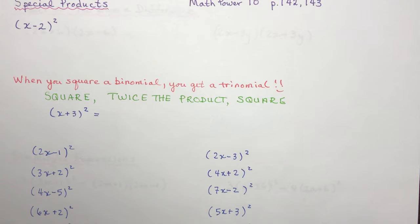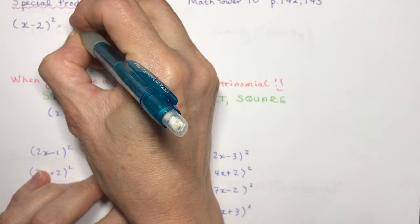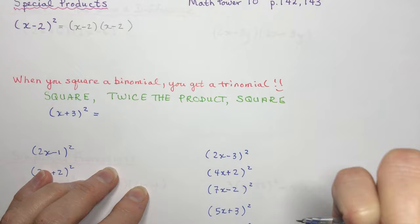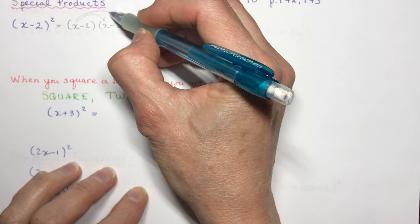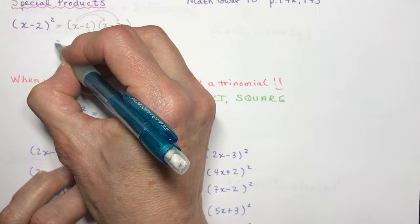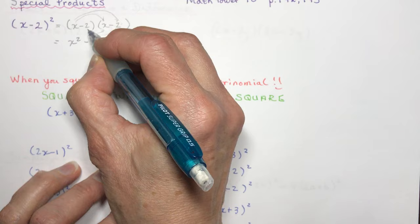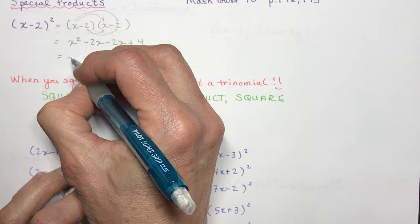If we look at (x − 2) squared, you know right away that means (x − 2) times (x − 2). Most of you would now know how to expand this using FOIL or multiplying each term in one bracket by every term in the next bracket. Expanding gives x squared, then minus 2x, then minus 2x again, then plus 4, which simplifies to x squared minus 4x plus 4.